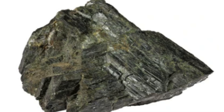One common type of lineation in geology is a slickenside, which is a polished and striated surface on a fault plane that indicates the direction of movement along the fault. Another type of lineation is a lineation of elongate minerals, which refers to the alignment of mineral grains in a rock or sediment that have been deformed by tectonic forces.